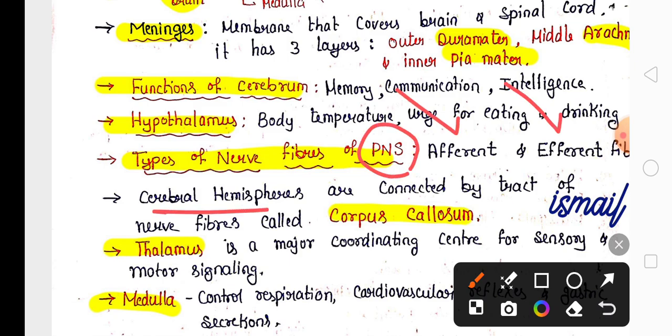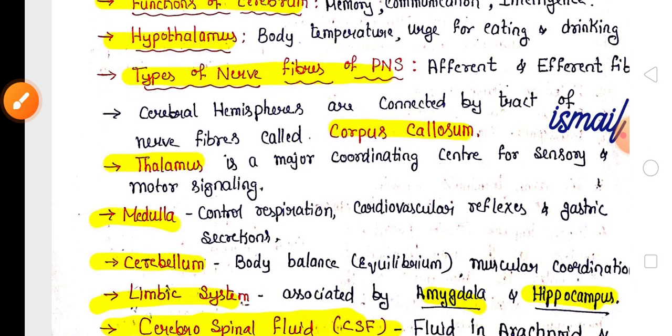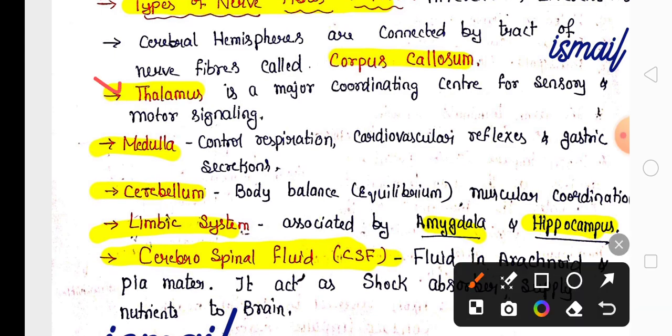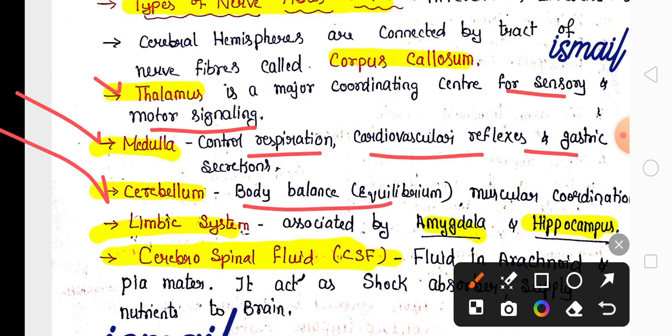There are two cerebral hemispheres connected by a band of nerve fibers called corpus callosum. Thalamus is a major conducting center for sensory and motor signaling. Medulla helps control respiration, cardiovascular activities, and gastric secretion. Cerebellum helps maintain body balance and muscular coordination.